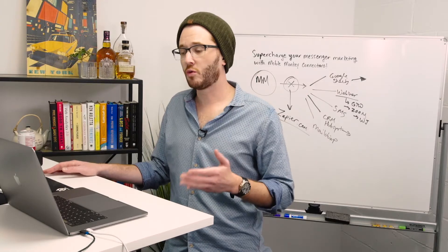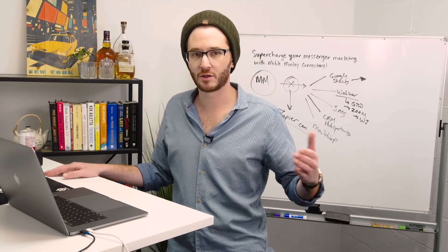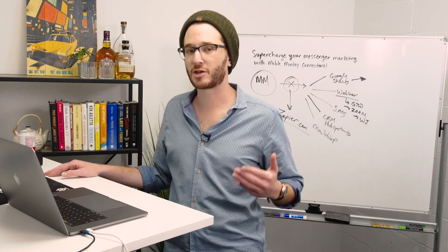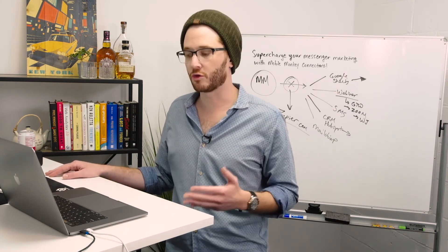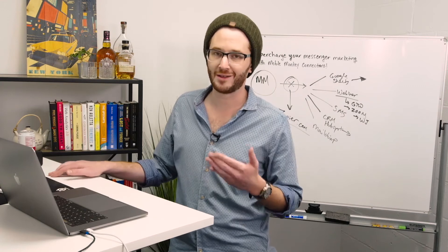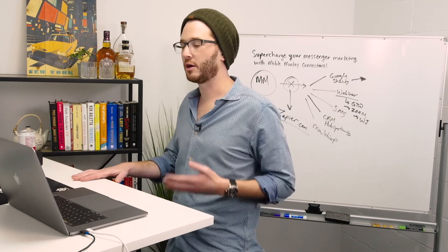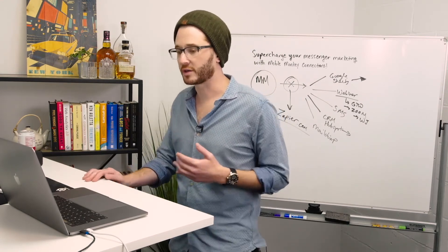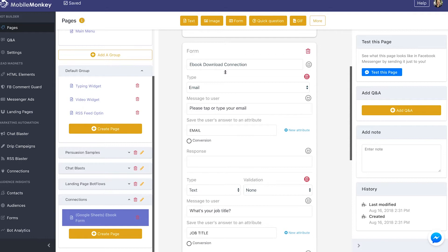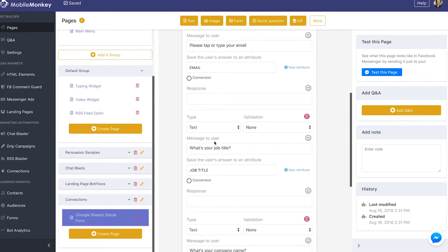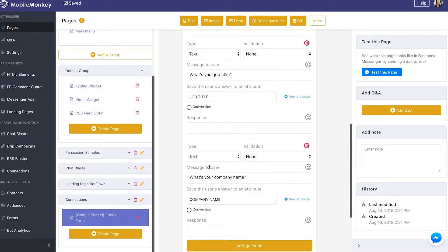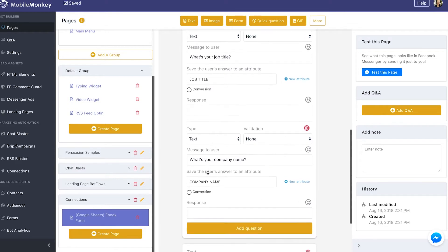Keep in mind you don't have to have a form to send data to Google Sheets. You could send any attributes, any characteristics from any audience to Google Sheets. I'm just using the form widget to illustrate how it might look in the real world. The form asks for email, then job title, then company name, and we're going to assume those are the important metrics we want to get into Google Sheets along with first name and last name.